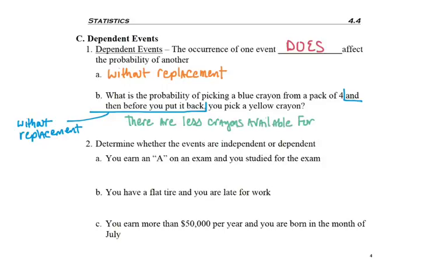In this case, there are less crayons available for the second pick, so we won't be able to have a denominator of four. There won't be four crayons to choose from.